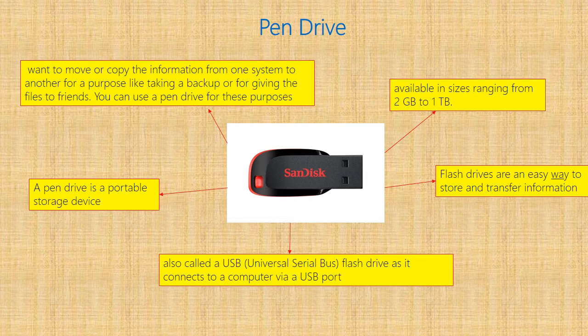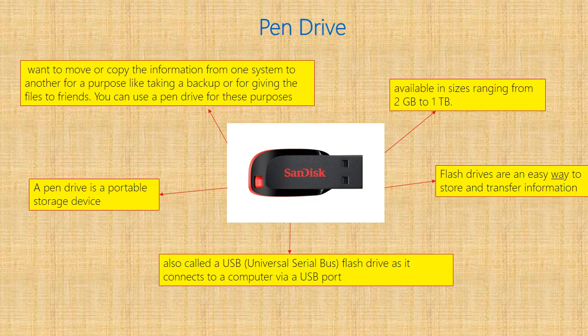The pen drive is used to move or copy information from one system to another — for taking backups or sharing with friends. A pen drive is a portable storage device. It is also called a USB flash drive, as it connects to the computer via a USB port (Universal Serial Bus). The available sizes of pen drives range from 2 GB to 1 TB (terabyte). Flash drives are an easy way to store and transfer information.